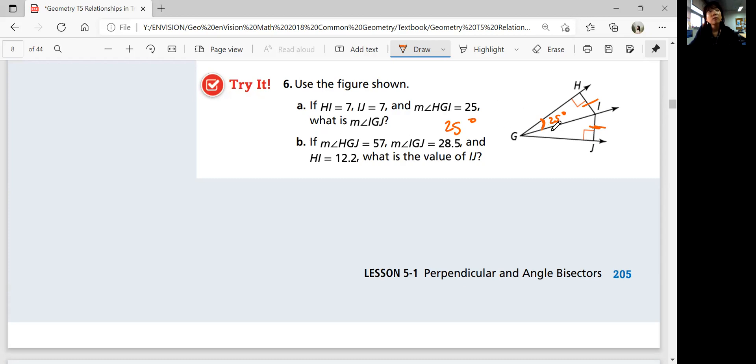Part B, if a measure of angle HGJ, the whole thing is 57. So if this is 57, and IGJ is 28.5, and HI is 12.2, what's the value of IJ? First, let's see if 28.5 is half of 57. Does 28.5 times 2 equal 57? Yes. So by the converse of the angle bisector theorem, we know that it's an angle bisector. So IJ would be equidistant, and so with HI, so IJ would be 12.2 as well.